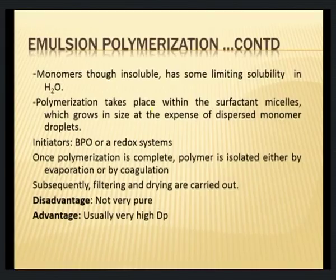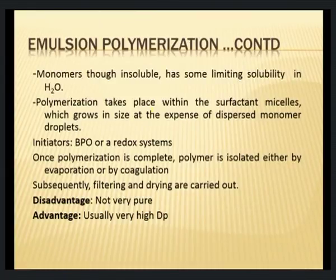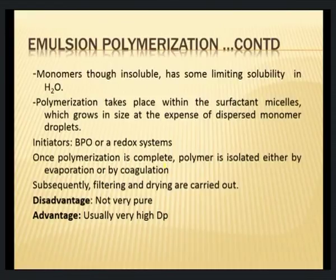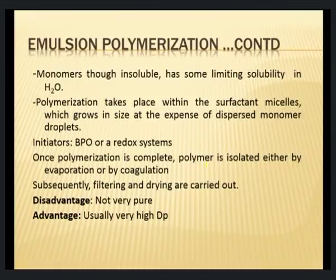The monomer, though insoluble, has some limiting solubility in water; sometimes polymerization takes place within the surfactant micelle and the micelle grows in size at the expense of dispersed monomer droplets, which get converted into polymers within the micelle structure. Commonly used initiators include benzoyl peroxide (BPO) or any redox catalyst systems.